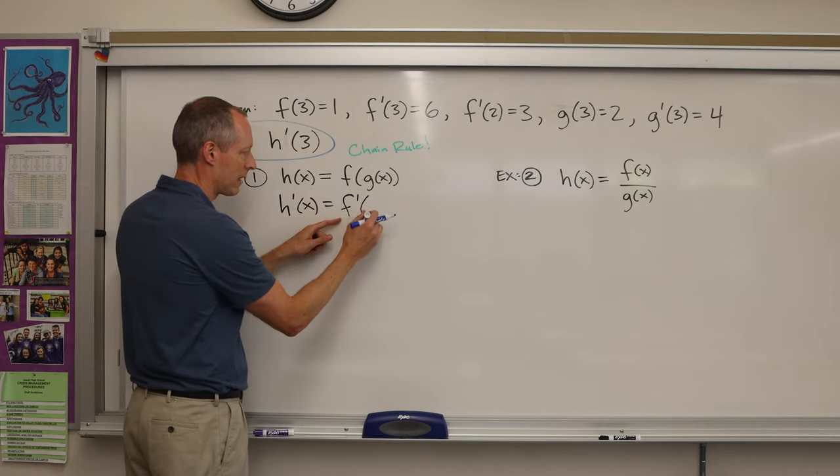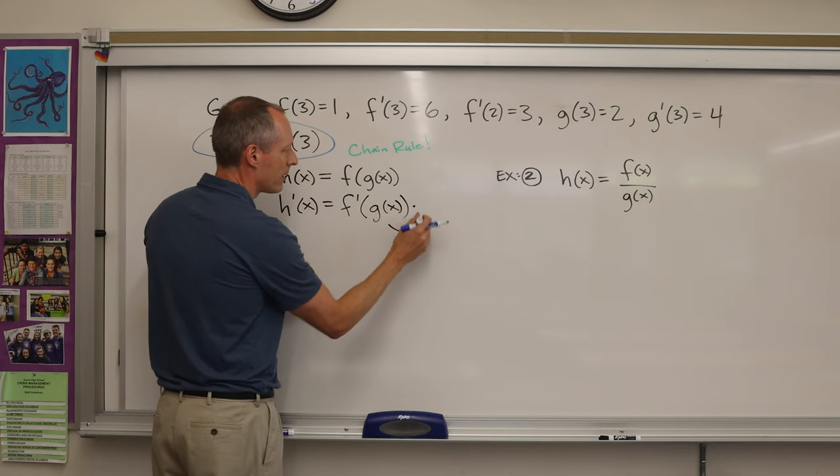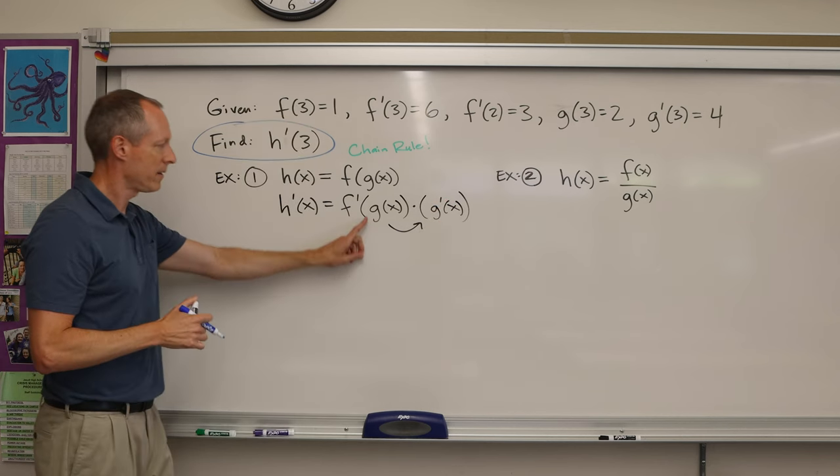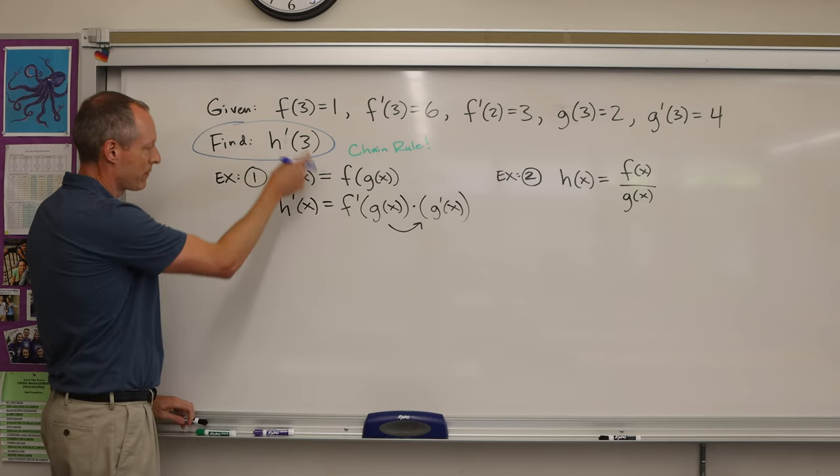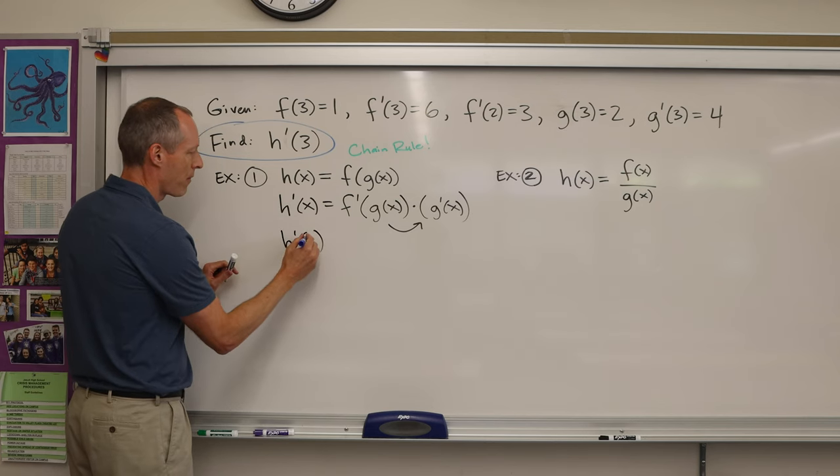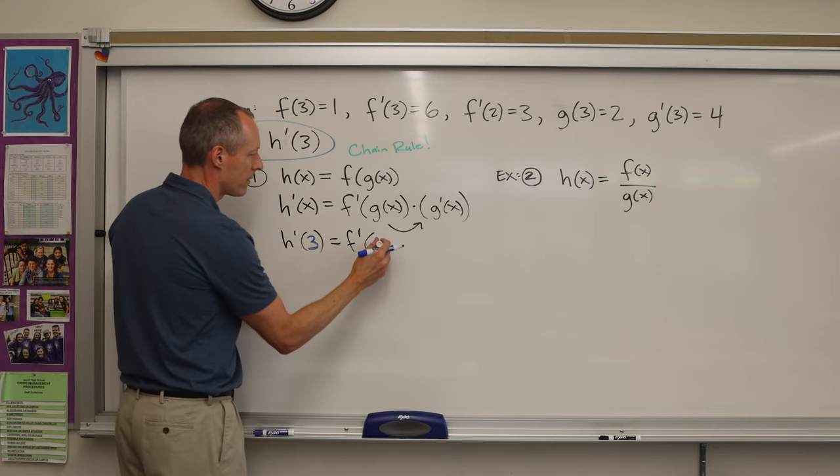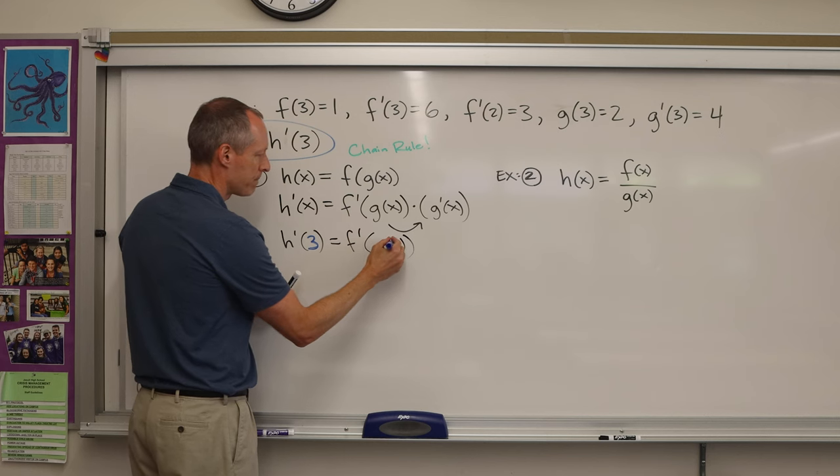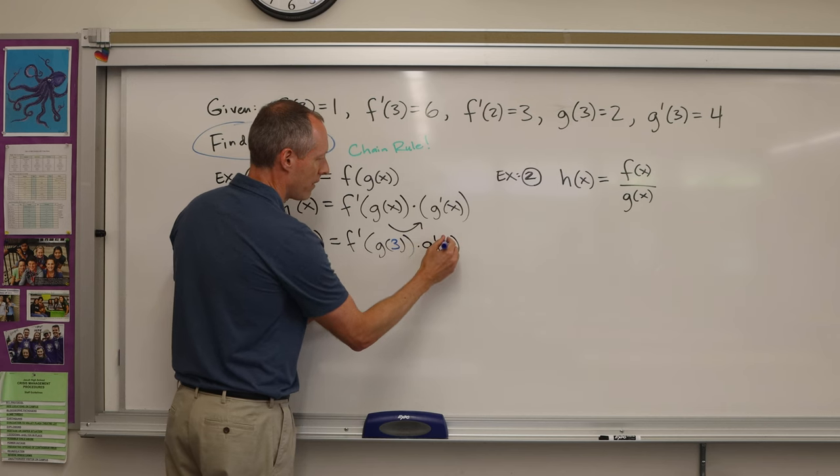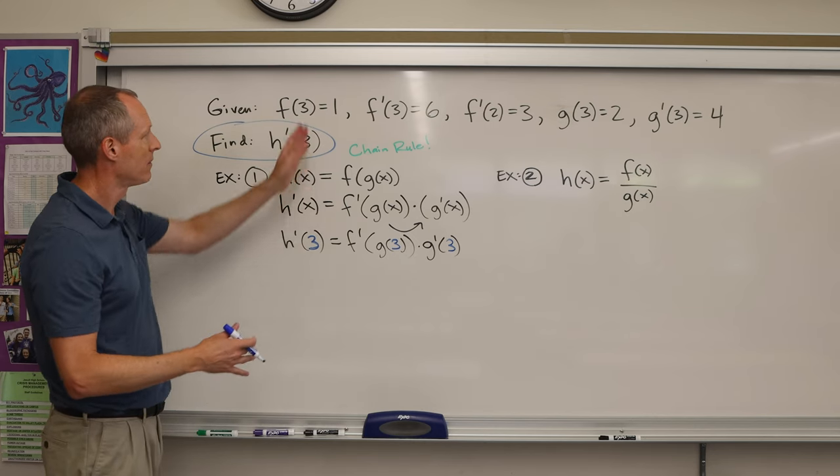So I do f prime, the derivative of the outside, I don't change the inside, but then I link on der inner, the derivative of the inside. So again, der outer der inner. Now we want to find h'(3), so I'm trying to color coordinate this. I'm plugging in 3 wherever I see an x, so now it's f'(g(3)) times g'(3).